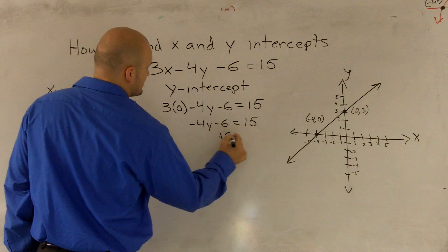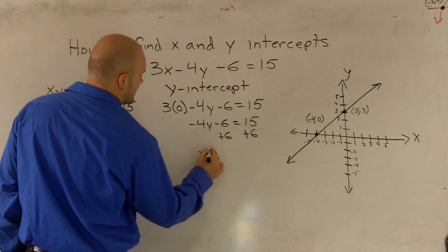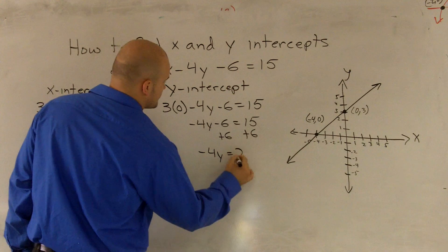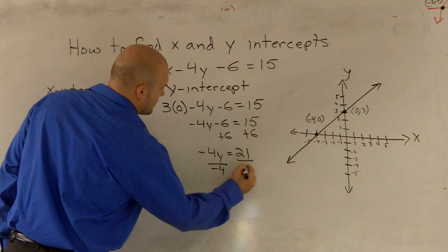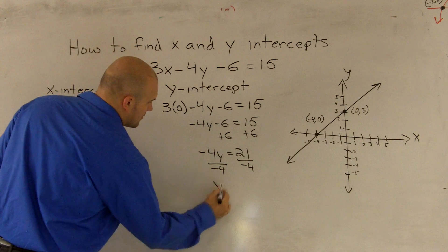So therefore I have negative 4y minus 6 equals 15. I add 6 on both sides. I get negative 4y is equal to 21.